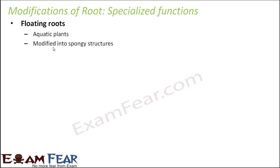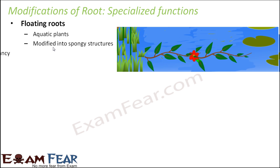That is why they are known as floating roots. An example would be many aquatic plants. In most aquatic plants, you can see that this is how the roots get modified to maintain buoyancy.